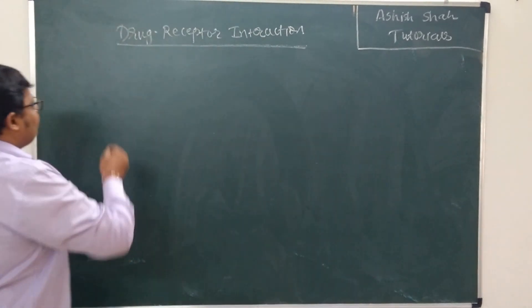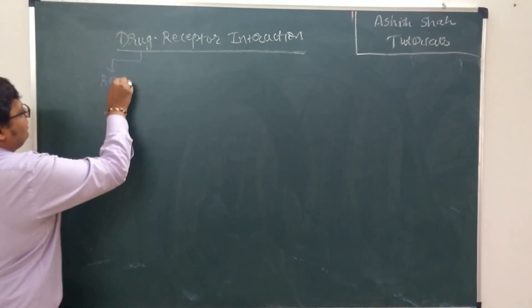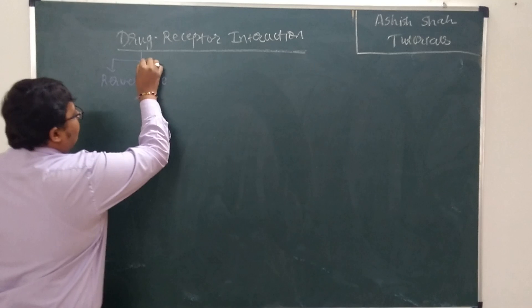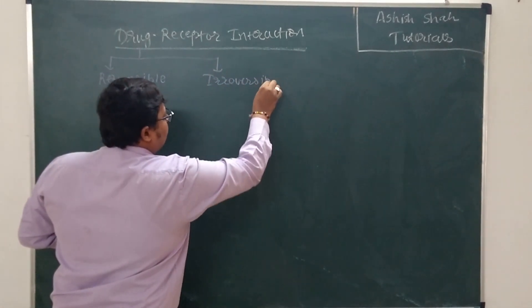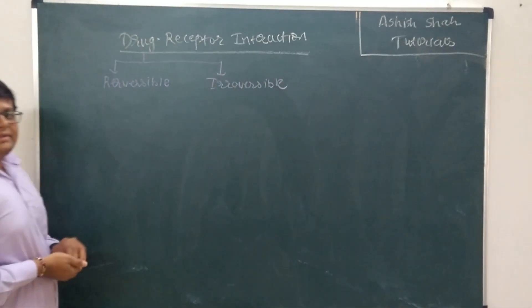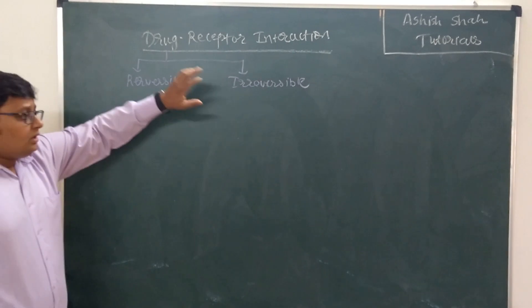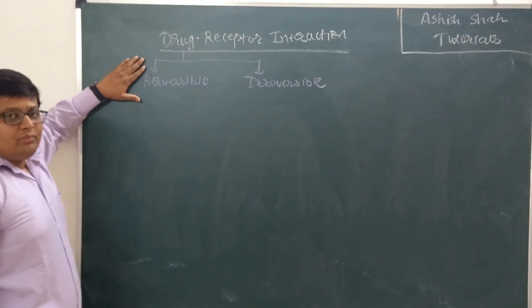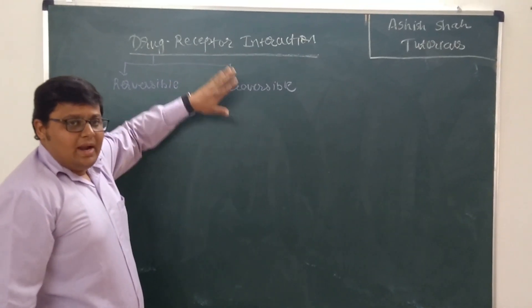Let us first talk about how drug binds to receptor. So drug binds to receptor in two ways. Either it is a reversible binding or it can be irreversible binding. Now most of the drugs undergo reversible binding.